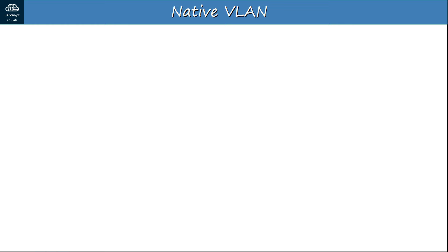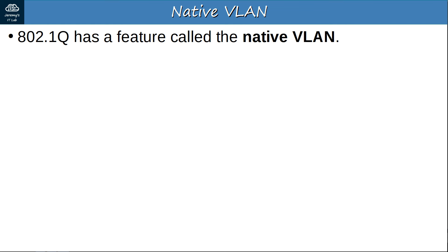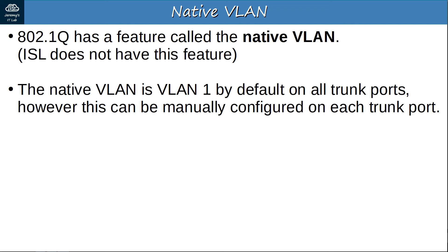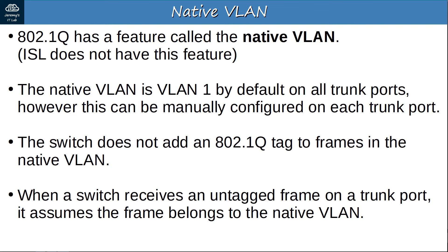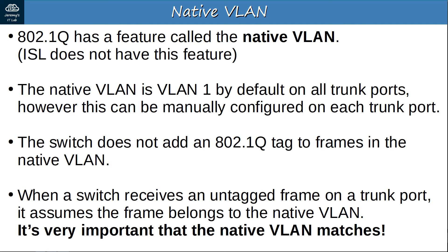Dot1Q has a feature called the native VLAN. Cisco's ISL does not have this feature. The native VLAN is VLAN1 by default on all trunk ports, but it can be manually configured on each trunk port — it must be configured per trunk port, not globally. The switch does not add an 802.1Q tag to frames in the native VLAN; it forwards the frame without the dot1Q tag. When a switch receives an untagged frame on a trunk port, it assumes the frame belongs to the native VLAN. It is very important that the native VLAN matches between switches — problems may occur if there is a mismatch.